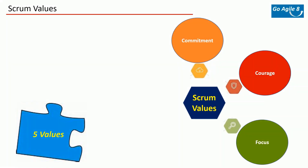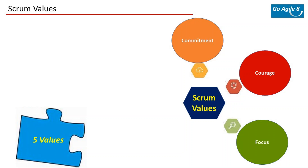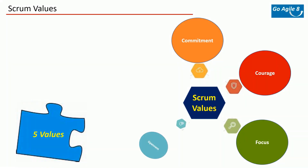Next is focus. Focus means whatever the team starts, they have to finish — they should not leave it halfway. Scrum teams should always be cognizant of limiting work in progress. Focus is one of the best skills scrum teams can develop. Scrum masters have a great role in encouraging focus by holding the team to their own definition of done. This starts with daily scrums — being punctual, attending every daily scrum, and tracking the burndown chart helps teams stay focused.